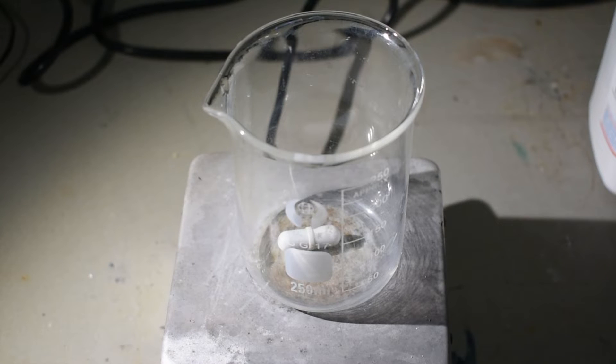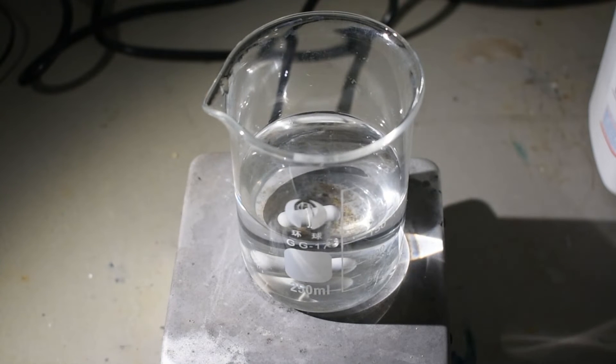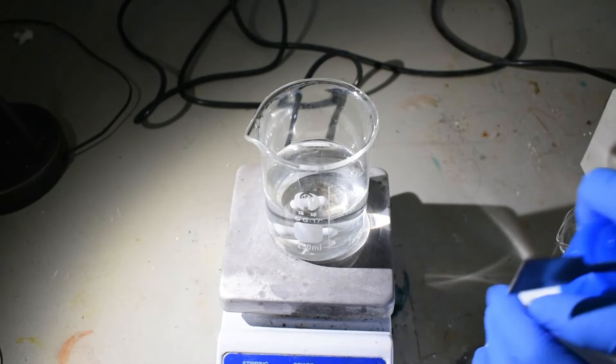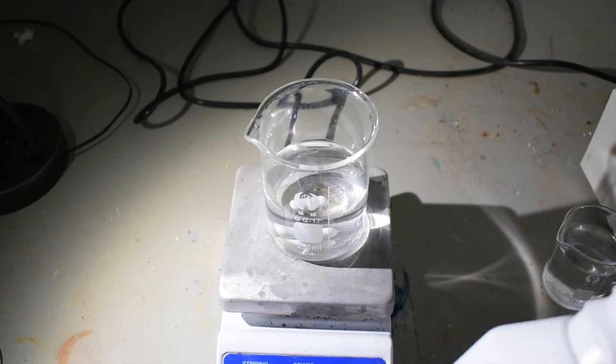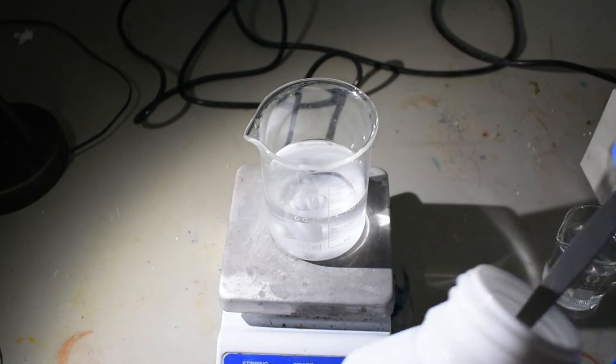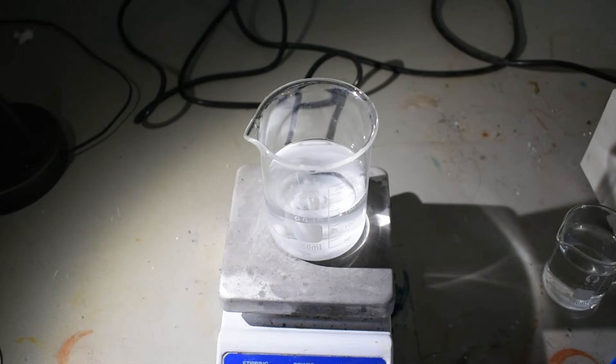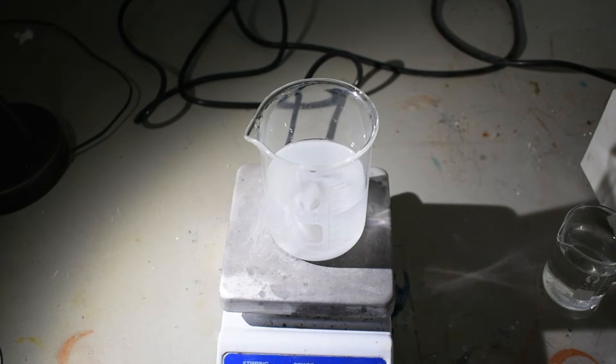First, I'm going to measure out about 150 mils of distilled water. And then to that, with stirring, I'm going to add a few scoops of solid barium nitrate. And I will dissolve this with stirring. This might take a little while, and may require a small amount of additional heating.